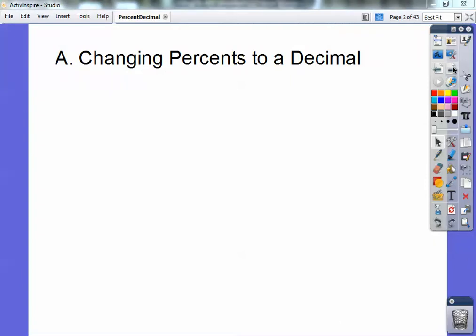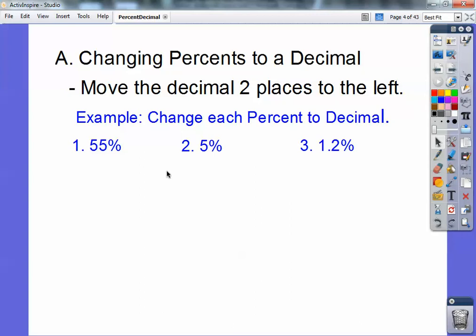To change a percent to a decimal, you just move the decimal two places to the left. So for example, 55%, 5%, and 1.2%. When the decimal is not here, it's always at the end on the right. So I'm going to move it two places over here, one, two, and so it becomes 0.55.